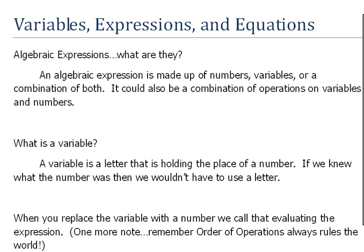It could also be a combination of operations on variables and numbers. So, for instance, it says an algebraic expression is made up of numbers. It could just be simply 2. That is considered an algebraic expression. It happens to be a real number, but it could also be called an algebraic expression.